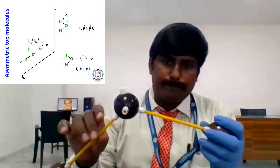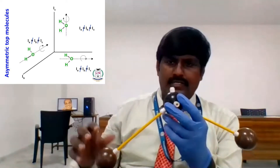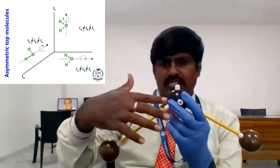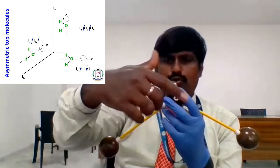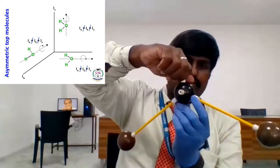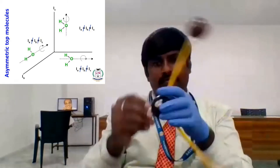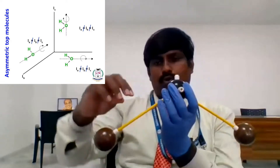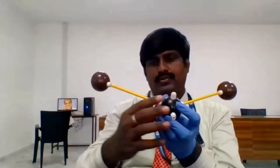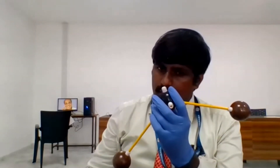This is a water molecule. Now let us consider through this x-axis, through y-axis, through z-axis. If I am rotating this, it is i-c. If I am rotating this way, this is i-b.